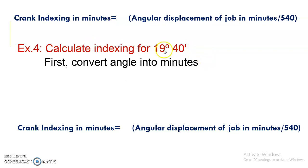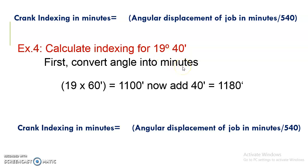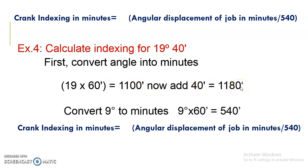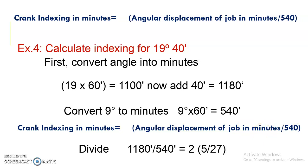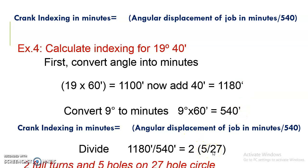Second example: calculate indexing for 19 degrees 40 minutes. Convert 19 degrees to minutes: 19 × 60 = 1140 minutes, plus 40 = 1180 minutes. Apply the formula: 1180 / 540 = 2 full turns plus 5/27. So the crank must be rotated 2 full turns and 5 holes on a 27-hole circle to index the job by 19 degrees 40 minutes.